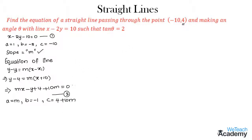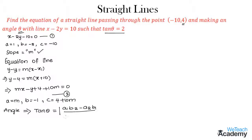Given that this line makes an angle theta with equation 1 such that tan theta equals 2, we use the formula: tan theta equals mod of (a1·b2 minus a2·b1) divided by (a1·a2 plus b1·b2).